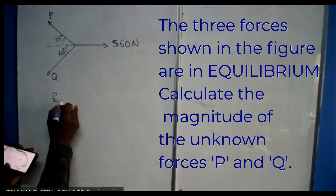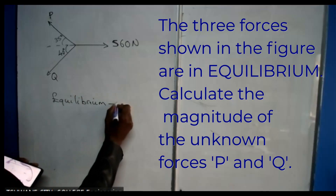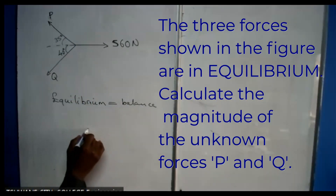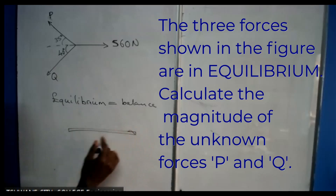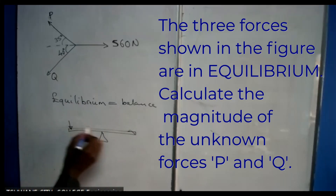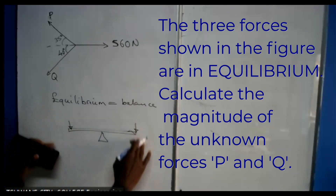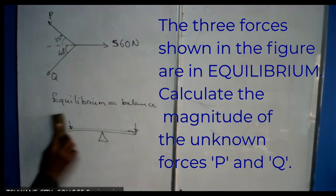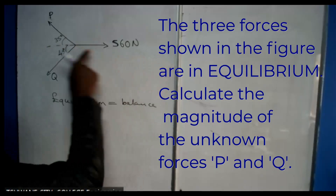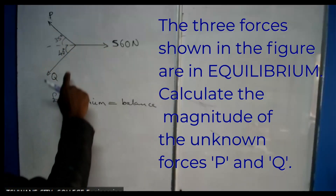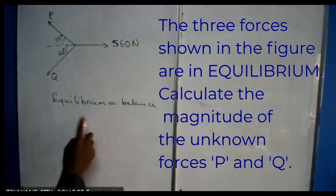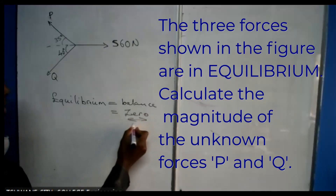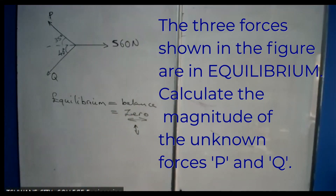Equilibrium means balance. These three forces are balanced — like a seesaw. Whatever force you push on one side, it remains balanced; it won't weigh too much on the other side. In the same manner, these three forces balance each other. Whether going horizontally or vertically, the sum of all forces equals zero when something is balanced.